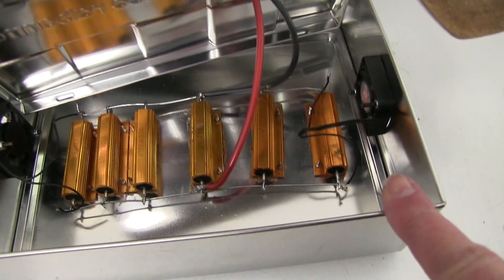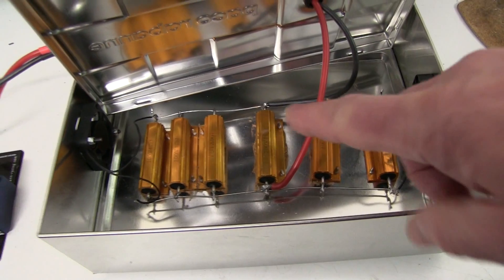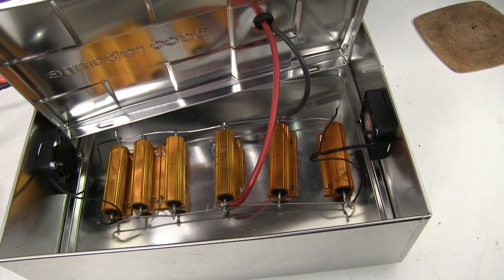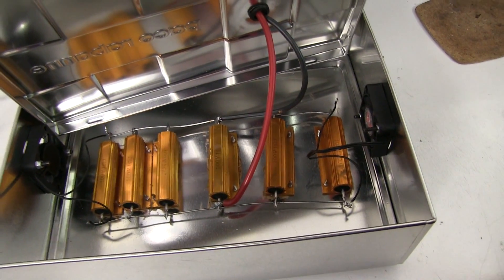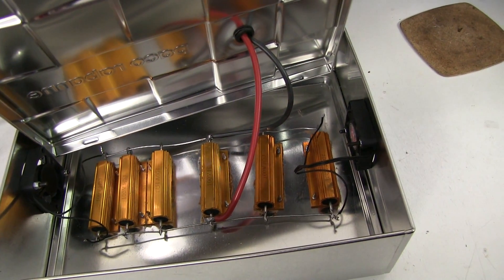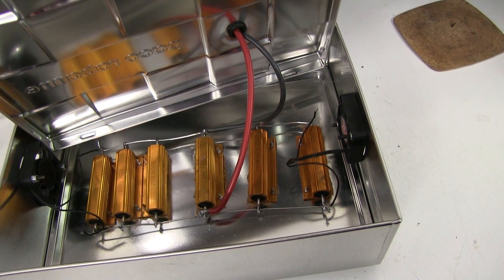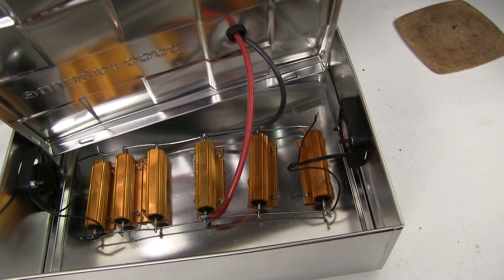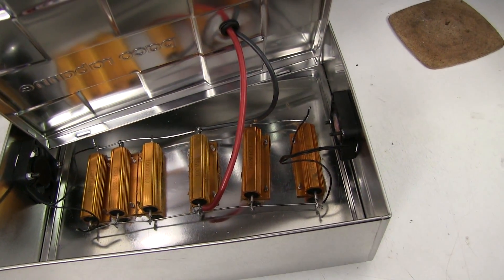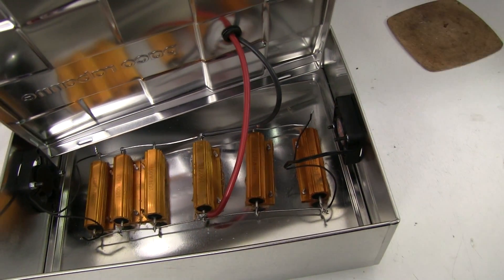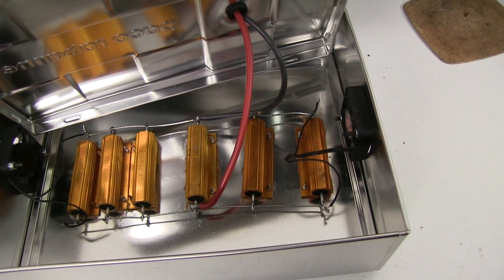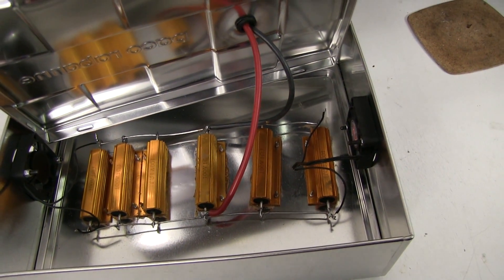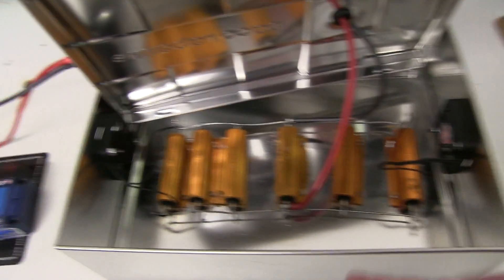We've wired up six 1-ohm resistors in parallel, 100 watts each, bought from China pretty cheap. You can wait a few weeks for them to come. Wired in parallel, giving you about 0.17 ohms, which with an 8-volt battery is about, well, be about 45 amps.